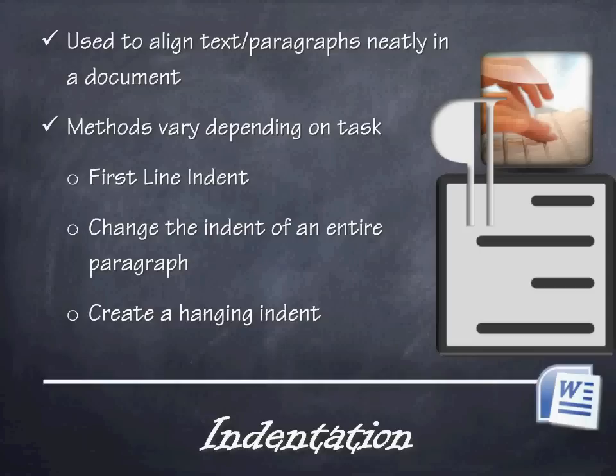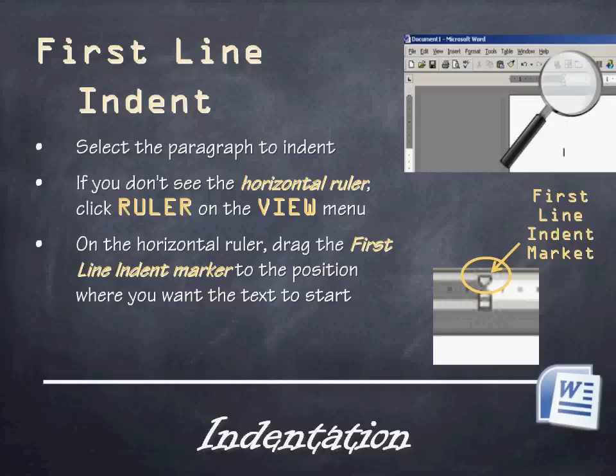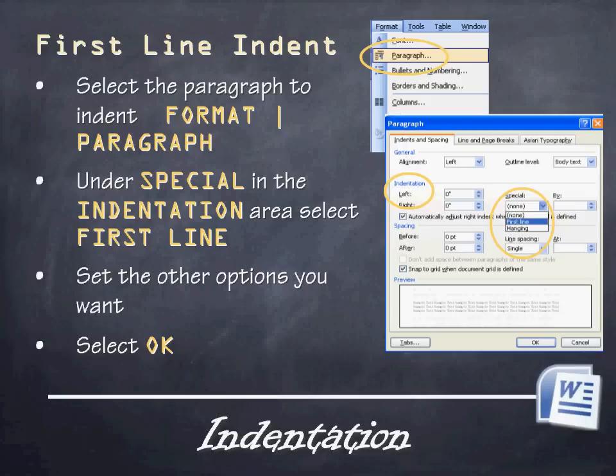Other times you're going to create a hanging indent — something you might look at for works cited. For first line indentation, select the entire paragraph, then use the horizontal ruler. If you don't see the ruler, click on ruler under the view menu. On the horizontal ruler, drag the first line indent marker — that's the top arrow in the set of arrows — to the position where you want the text to start. Sometimes the indent marker can be a little finicky and hard to click and drag.